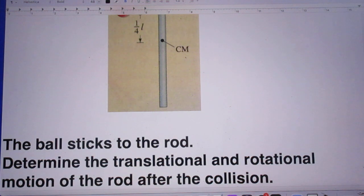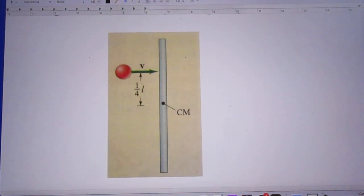The question is determine the translational and the rotational motion of the rod after the collision. So, I want two answers. Translational and the rotational motion of the rod after the collision.